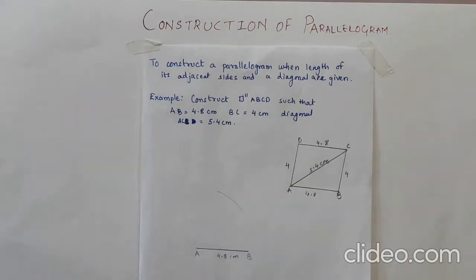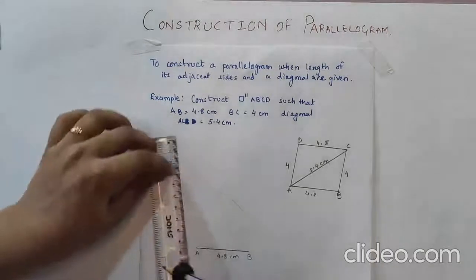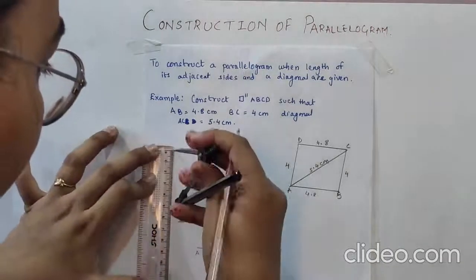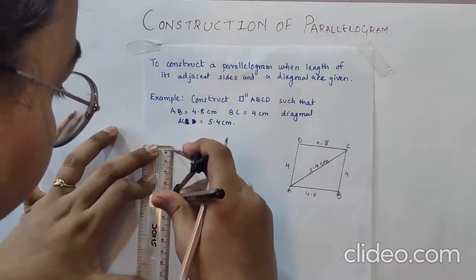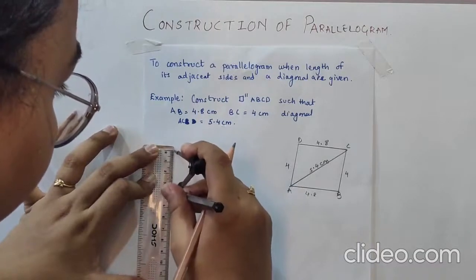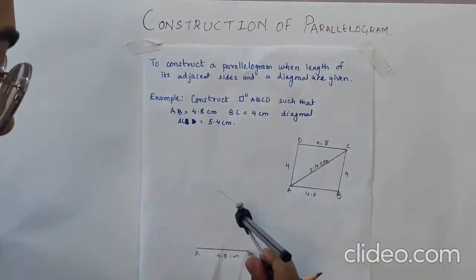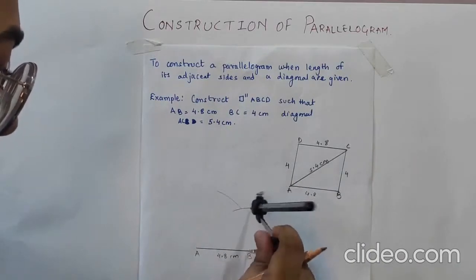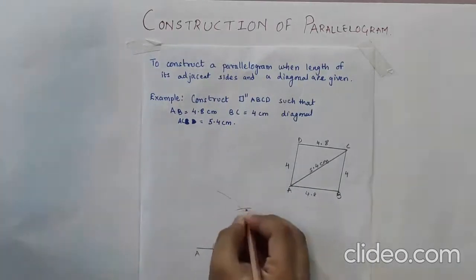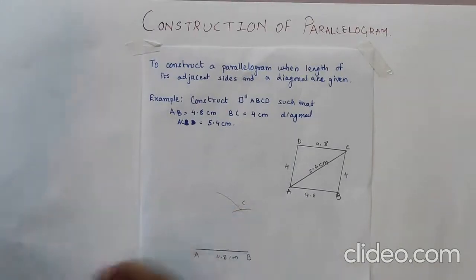The third step is from B we have to cut the arc of 4 cm. So for that we will measure 4 cm. Now keep it on B and cut the arc. And this point of intersection is nothing but my point C.